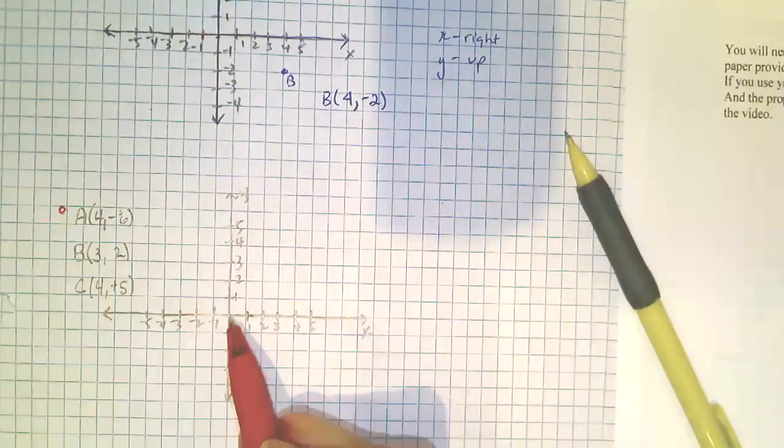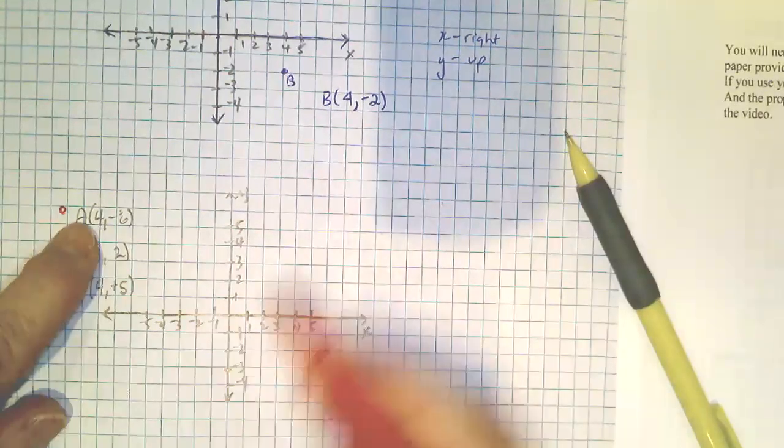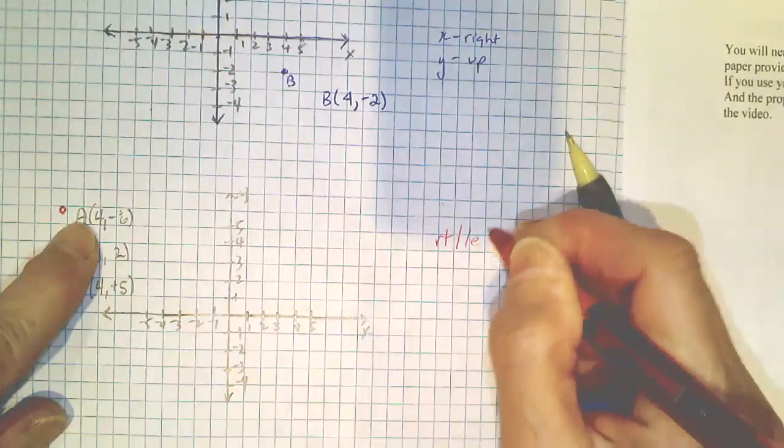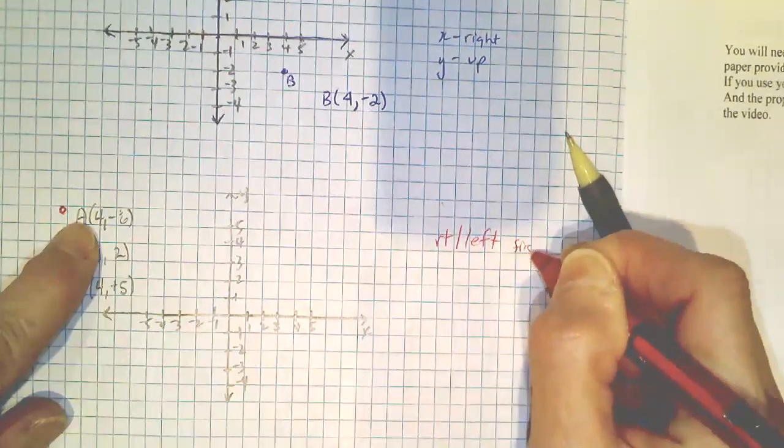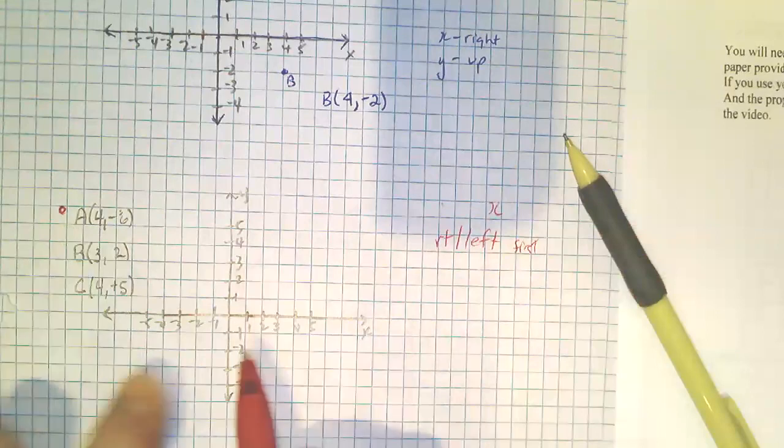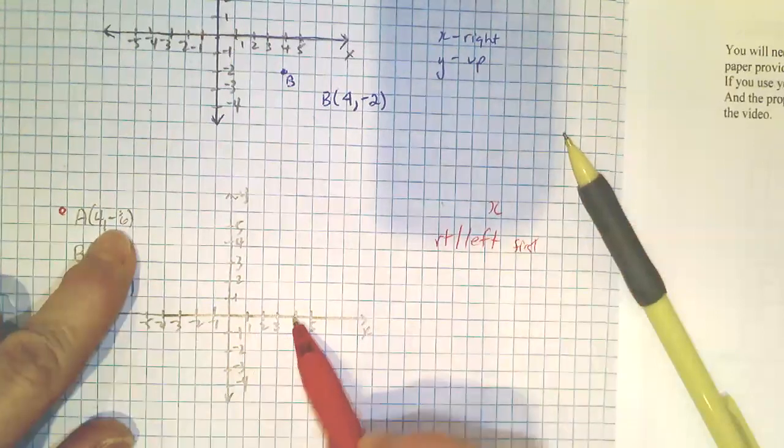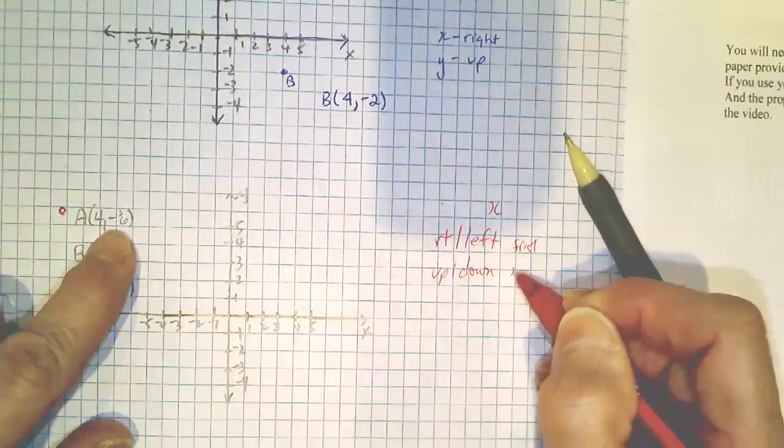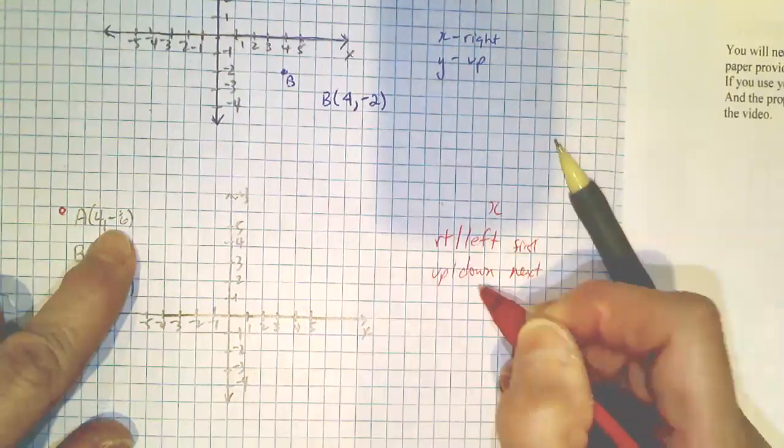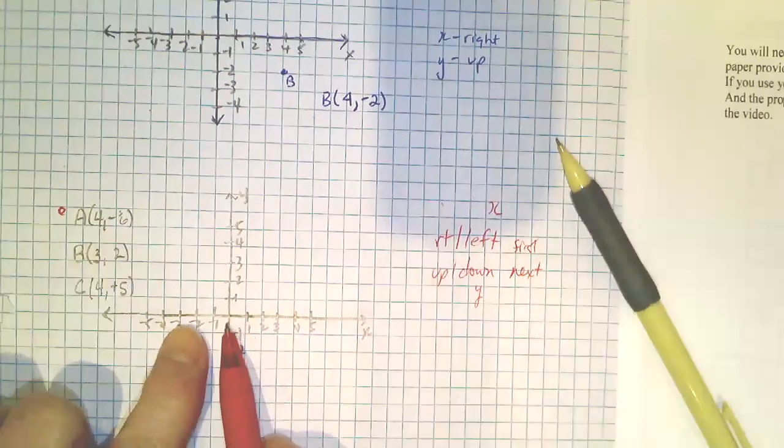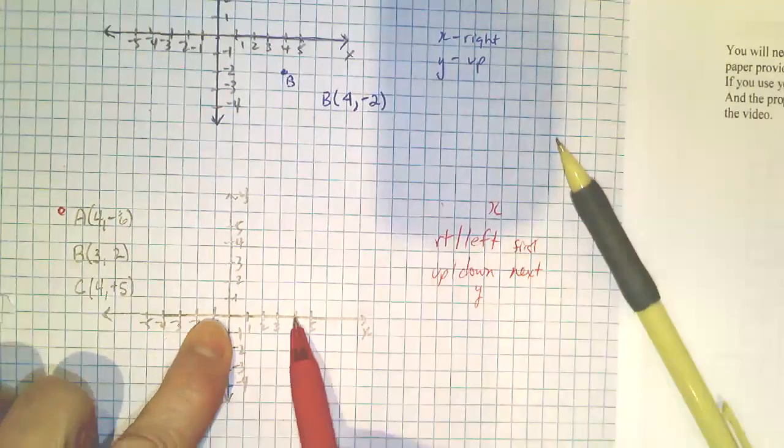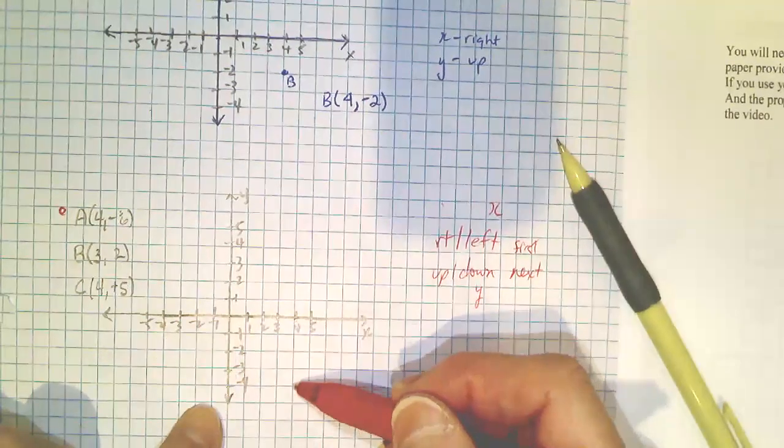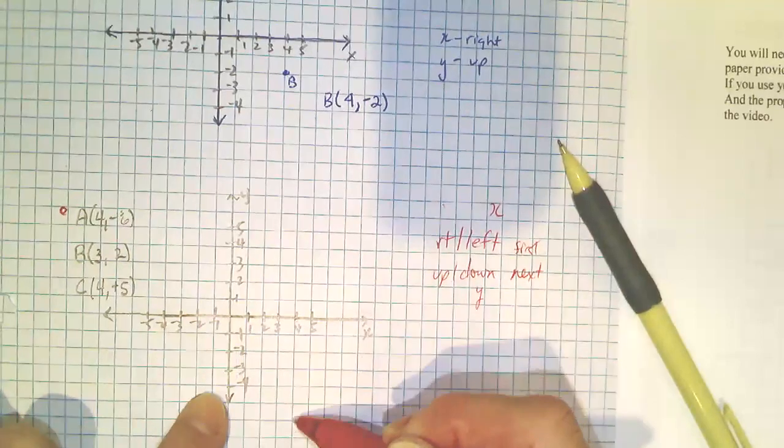So four, you start at the origin. You always go right or left first. That's the X. So because it's positive, I go to the right four and then you go up or down second. Next. Okay. And those are the Y's. So I started the drawing. I go right four, down to six. That's negative four, negative five. And then you label it with an A. Point number one.